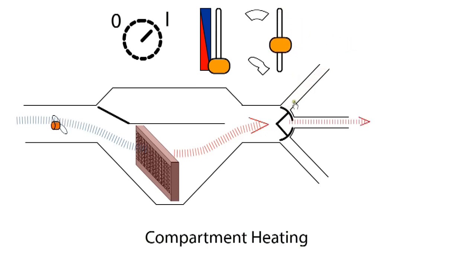Vents direct air to the windscreen area for maintaining clear glass, to the passenger area or to the floor area as required.